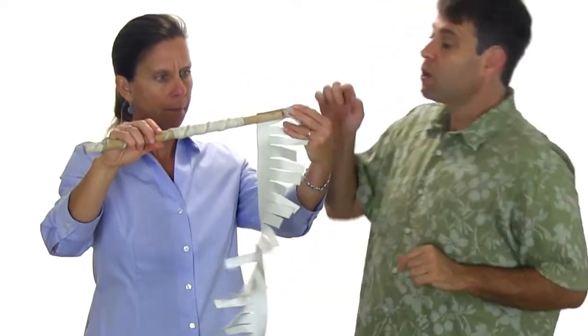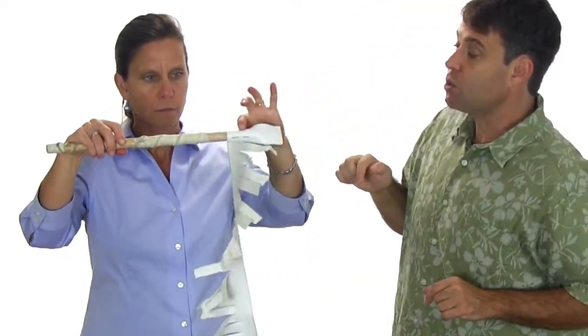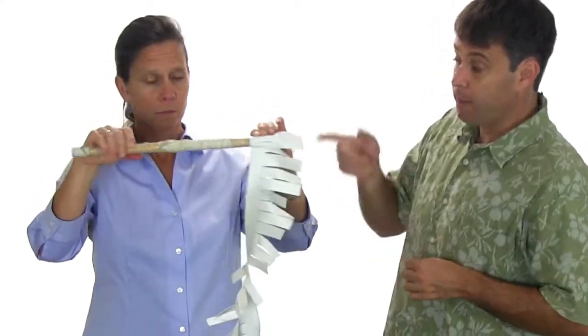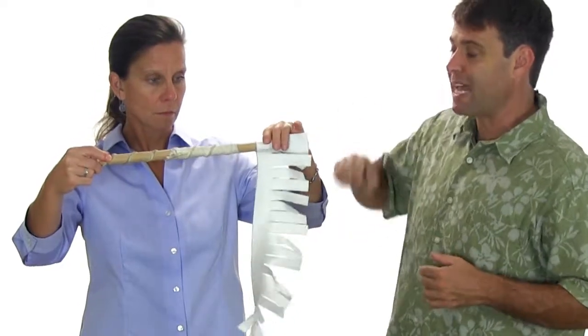Then you attach one end to the dowel. Now you can use a couple of short wood screws, a staple gun, or even some double-sided tape just to get it started and held there.